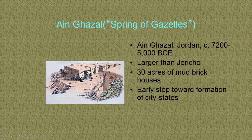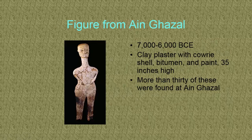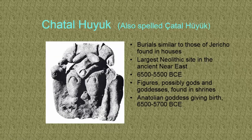This is a reconstruction drawing of the city of Ain Ghazal in Jordan — bigger than Jericho, with 30 acres of mud brick houses. This is an early step toward city-states, a kind of bridge culture. It doesn't have walls or fortifications around it. This is a figure found there, made out of clay plaster — they found more than 30 of these things.